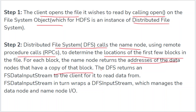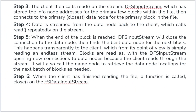For each block, the name node returns the addresses of the data nodes that have a copy of that block. The DistributedFileSystem returns an FSDataInputStream to the client to read the data. The FSDataInputStream wraps a DFSInputStream which manages the data node and name node interactions. Step 3: the client calls read on the stream, and the DFSInputStream connects to the primary data node for the first block, streaming data back to the client.